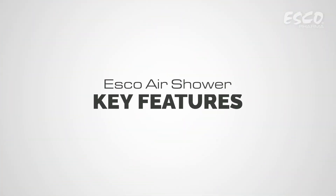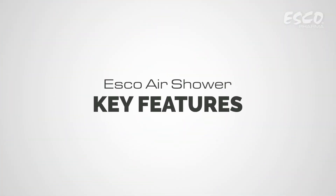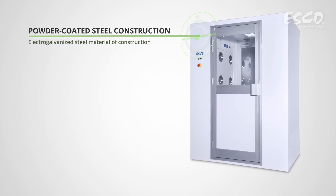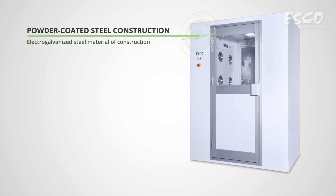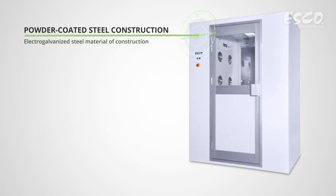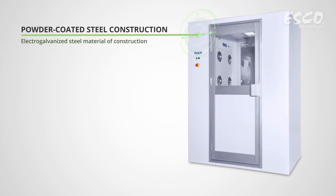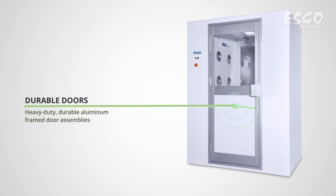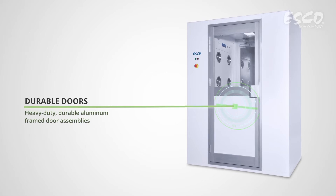Esco air shower key features. The air shower is constructed of electro-galvanized steel sheets with an abrasion-resistant oven-baked powder-coated finish. Heavy-duty durable doors with glass windows permit visibility.